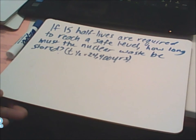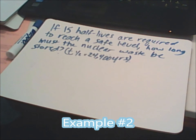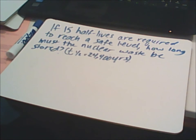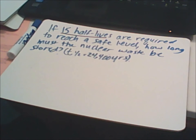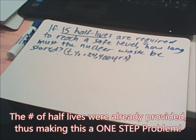Here's the next example: if 15 half-lives are required to reach a safe level, how long must the nuclear waste be stored? The half-life in this case is 24,400 years. Note that in some problems you have to calculate the number of half-lives yourself, but in other problems they automatically give you that number. This problem is a one-stepper.